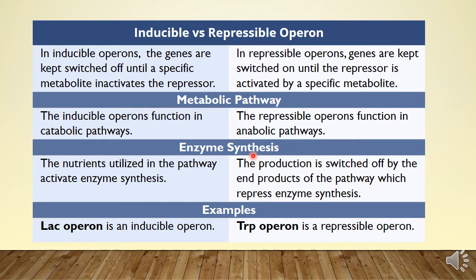Regarding enzyme synthesis: in an inducible operon, the nutrients utilized in the pathway activate enzyme synthesis. In a repressible operon, production is switched off by the end products of the pathway — those end products repress enzyme synthesis in an antagonistic way. For example, the lac operon is an inducible operon and the tryptophan operon is the repressible operon.